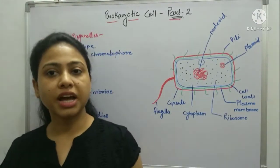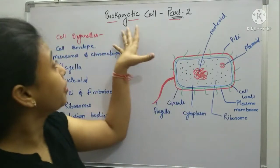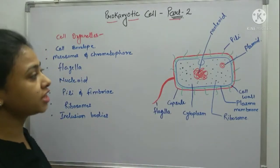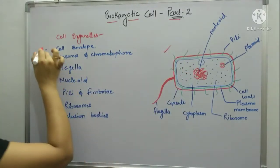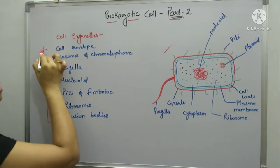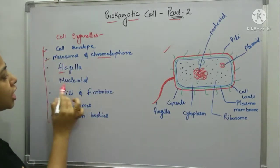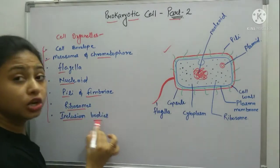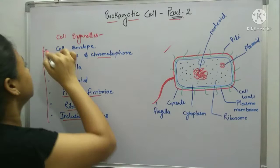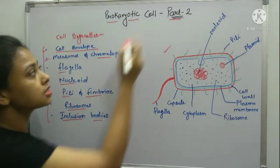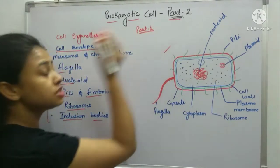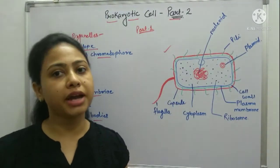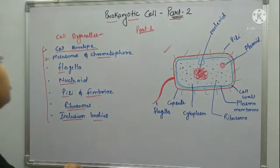Hello everyone, this is Tanusha Gupta and today my topic is prokaryotic cell part 2. This is the structure of a prokaryotic cell and these are the points I am going to discuss: cell envelope, mesosome and chromatophore, flagella, nucleoid, pili and fimbriae, ribosome, and inclusion bodies. The last point I have already discussed in part 1; for reference you can watch that video and I will share the link in the description box.